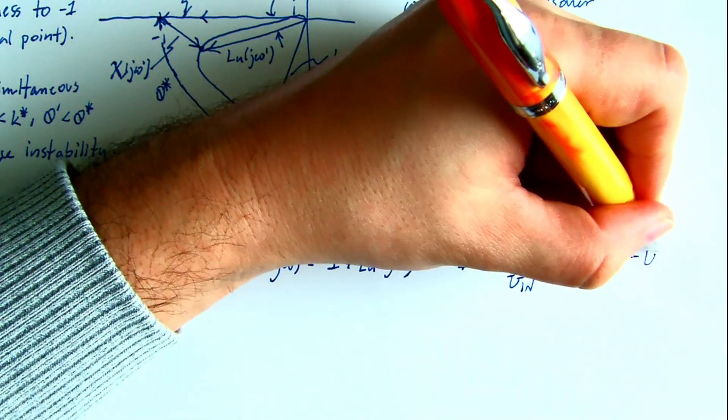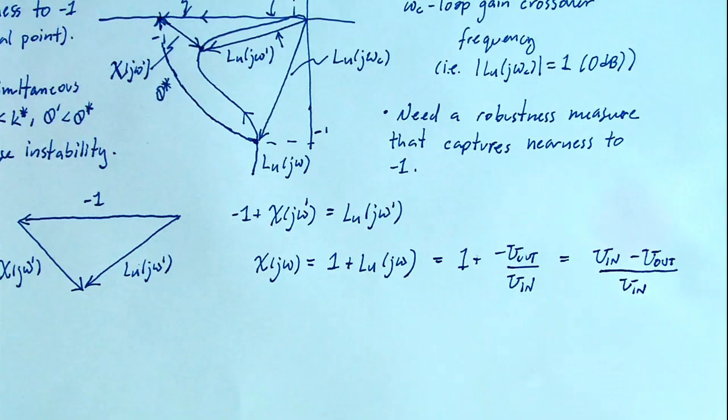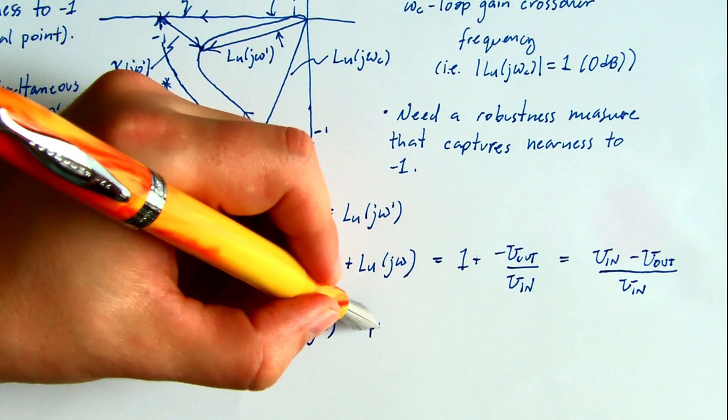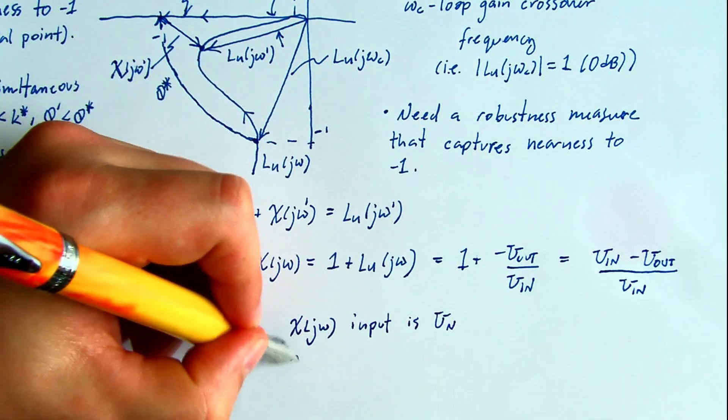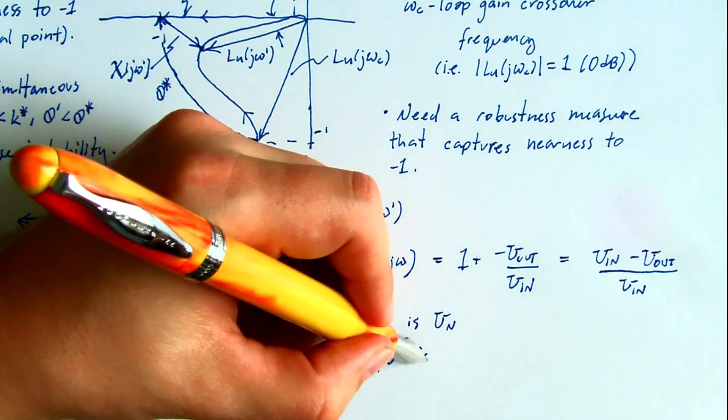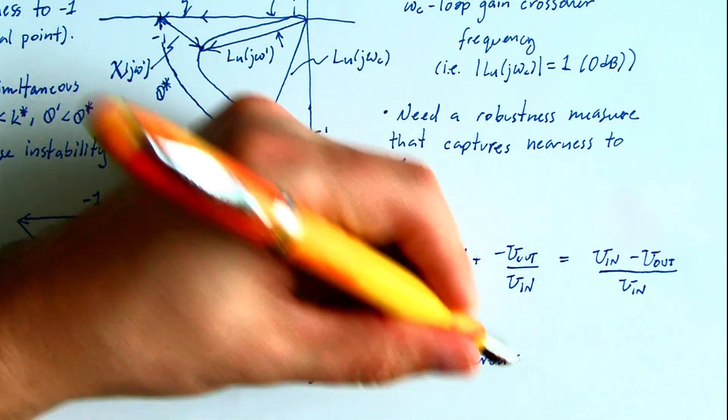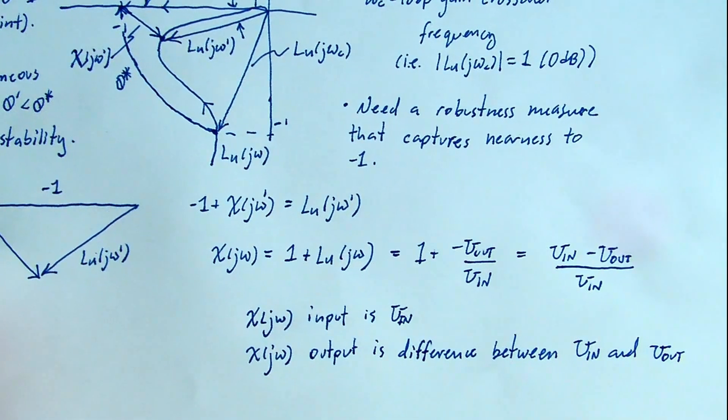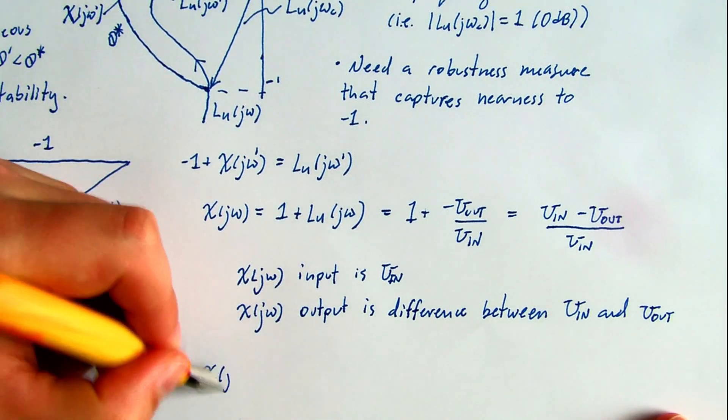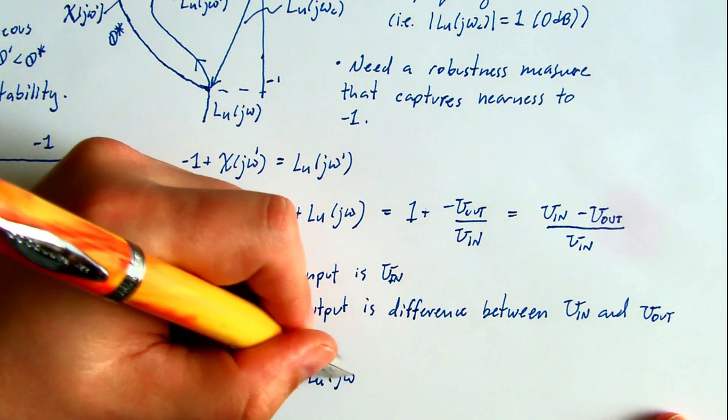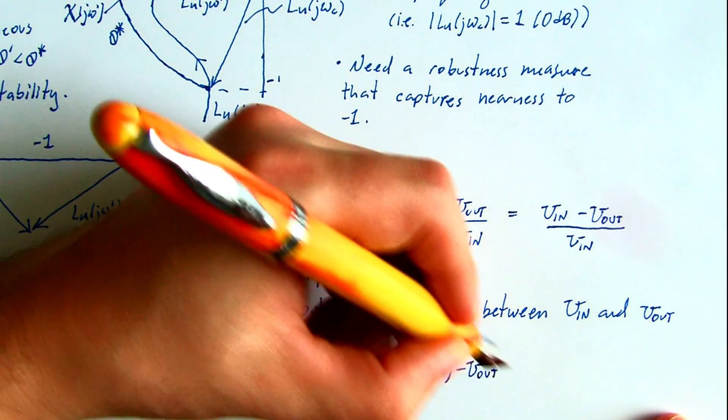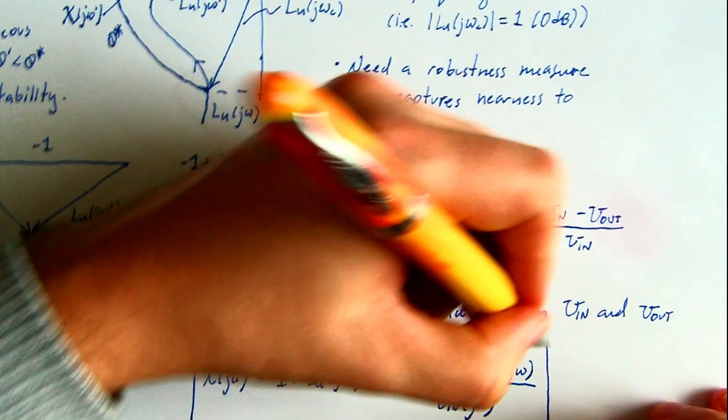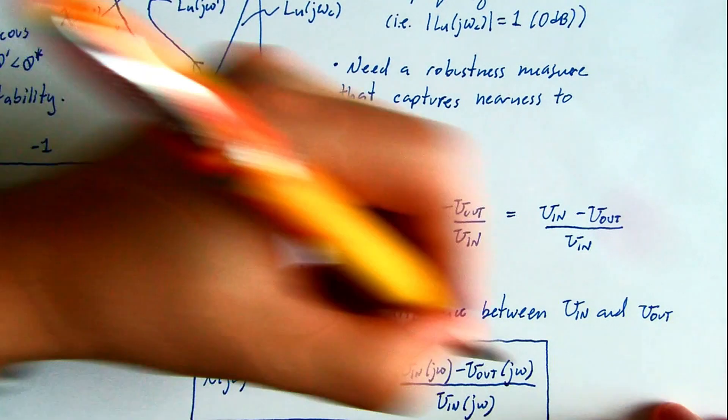Its input is the control into the loop that's broken at the plant input, and the output of chi is the difference between what was input and what is returned or output. So in summary, this new variable chi is called the return difference transfer function, and it's key to determining the robustness metric we're introducing here, vector margin.